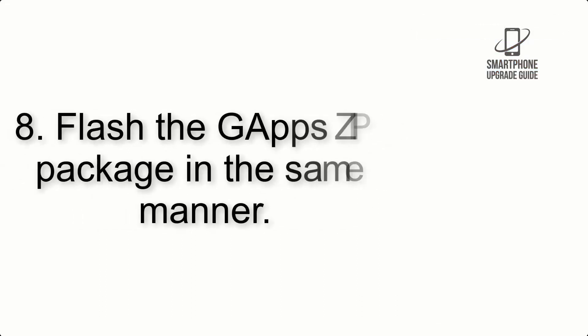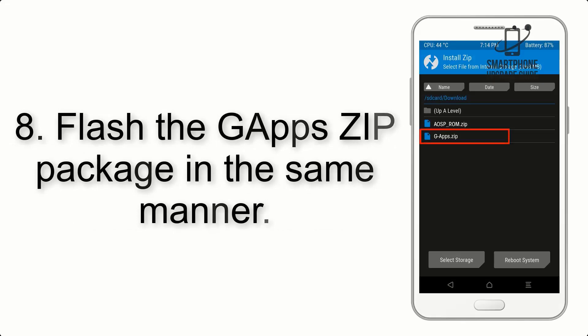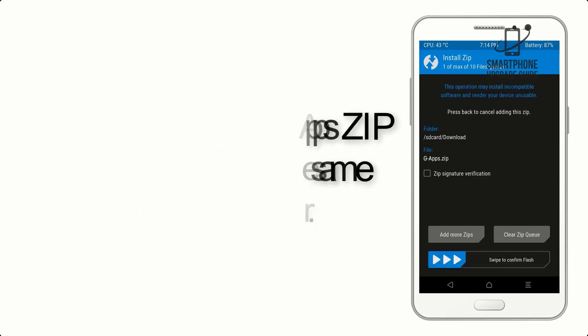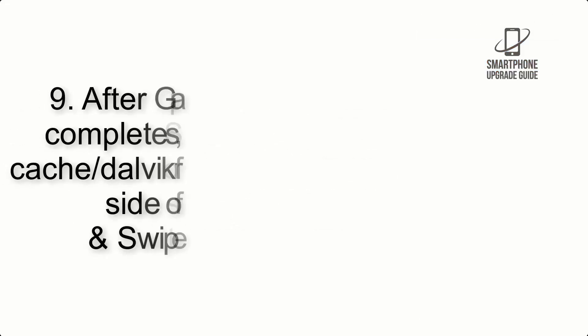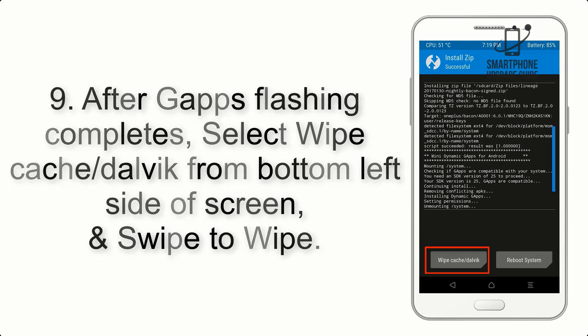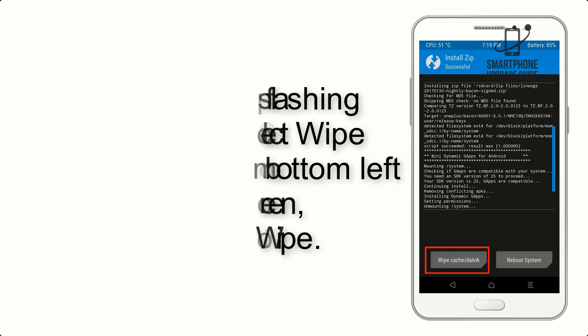Step 8: Flash the GApps ZIP package in the same manner. Step 9: After GApps flashing completes, select Wipe Cache and Dalvik from the bottom left side of the screen, and swipe to wipe.